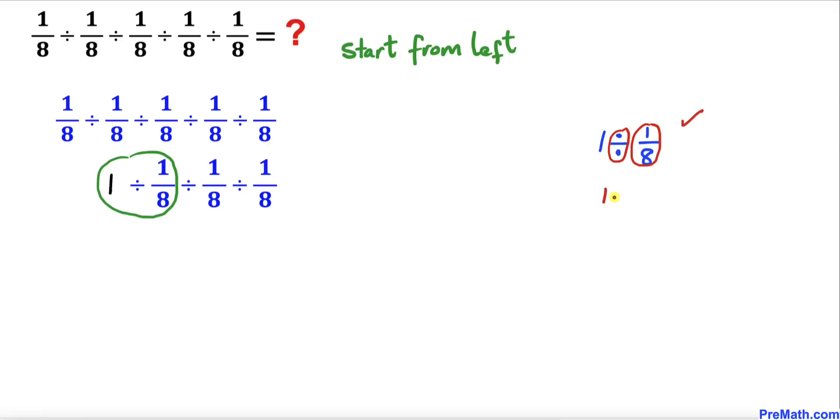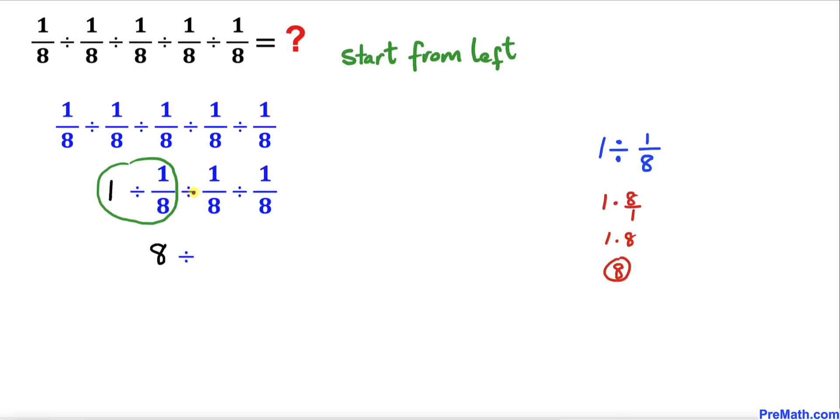So we can write 1 times 8 over 1 which is same as 1 times 8 and which is equal to 8. So therefore this part has been simplified to simply 8.